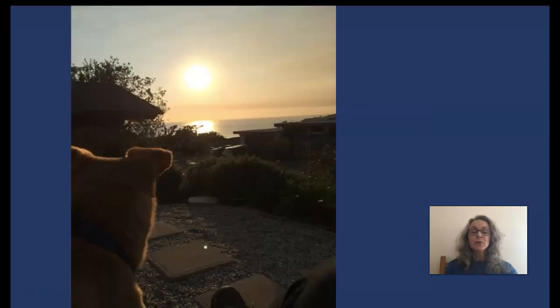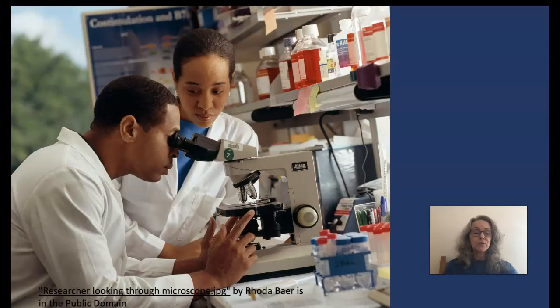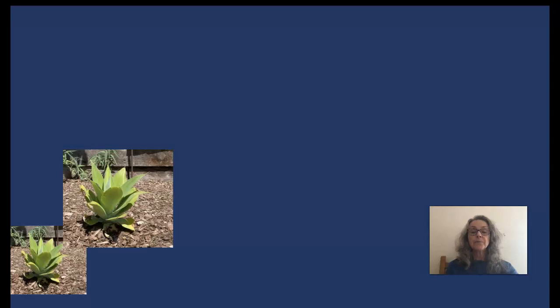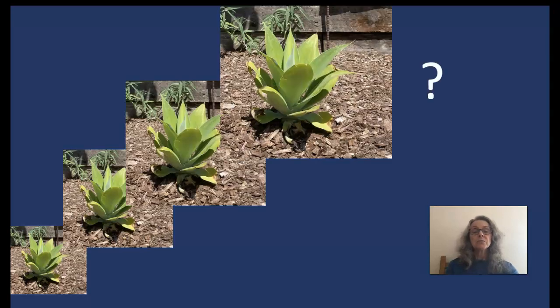with observing the world around us and asking questions. I observe this plant. Observation is the first step in the scientific method. I notice that it grows over time and I wonder what conditions will make this plant grow better.